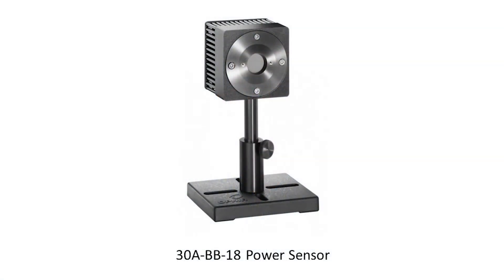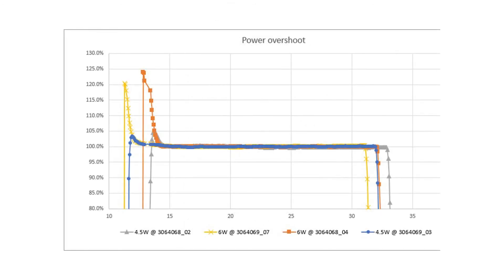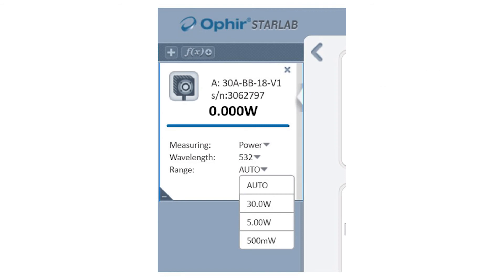The second case has to do with overshoot. This time, a customer was measuring several watts of power with a thermal sensor — in this case, the Ophir 30ABB18. As the power of the beam changed, they found that sometimes they saw a bad overshoot until the reading stabilized at the new power, and other times they did not see such an overshoot. So we again asked for a data log file to help us diagnose the issue. The power ranges defined in this sensor are 30 watts, 5 watts, and 500 milliwatts — and, of course, auto range.